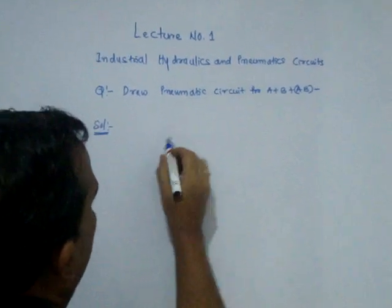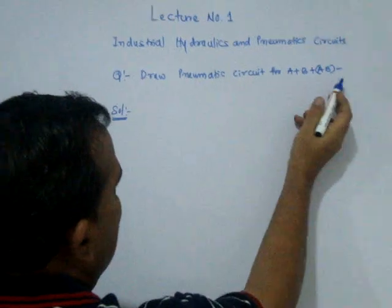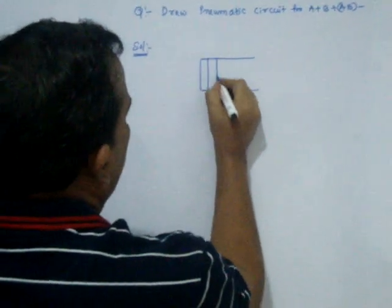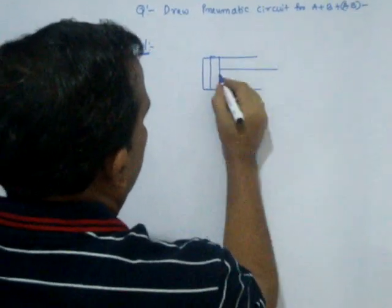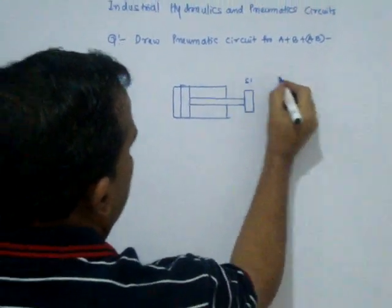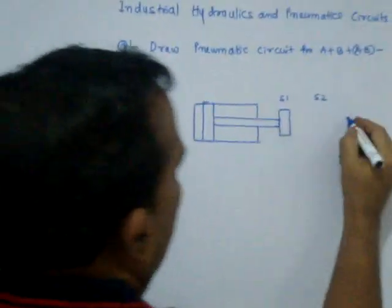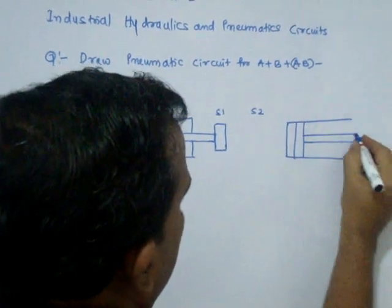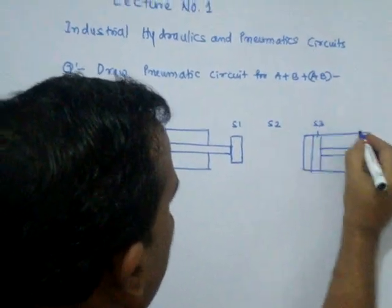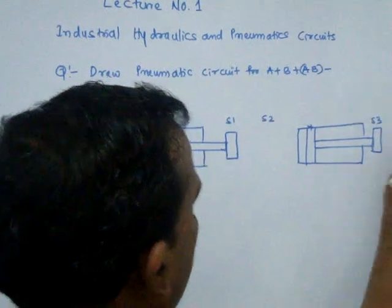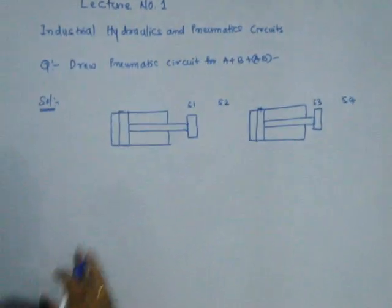Here two cylinders are required — A+ and A-, and B+ and B-. This is a pure pneumatic circuit. S1 and S2 are the limit switches for one cylinder, and S3 and S4 are the limit switches for the other cylinder — pneumatic limit switches, because it is a pure pneumatic circuit.